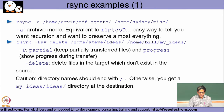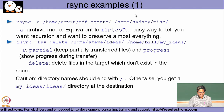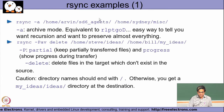To use rsync, I specify rsync minus a, then the source location I want to back up, and then the destination location. In this example both source and destination are the same machine, but in a typical scenario the destination machine is different, as we will see in the next slide. The archive mode means we want to take an archive of the entire source and sync it to the destination.